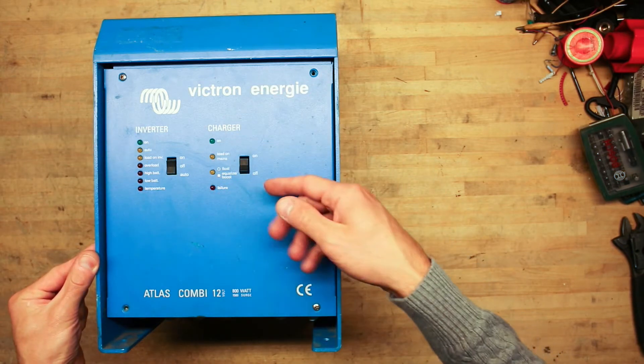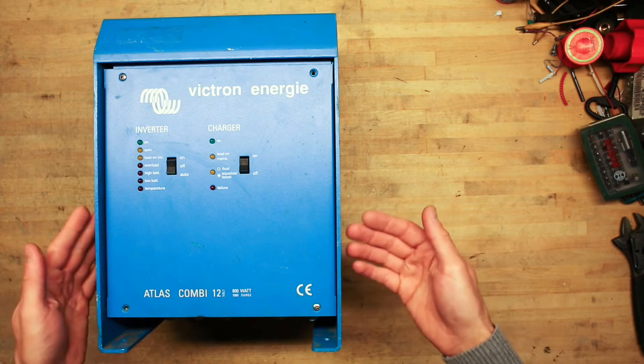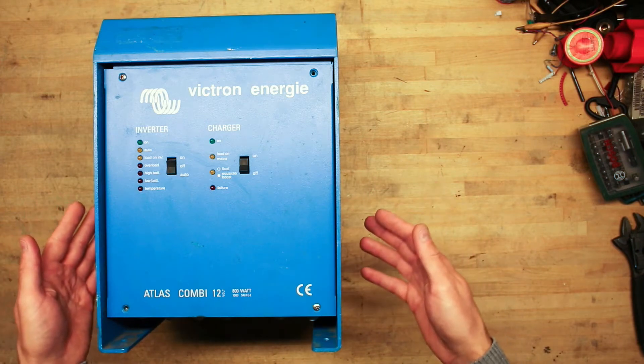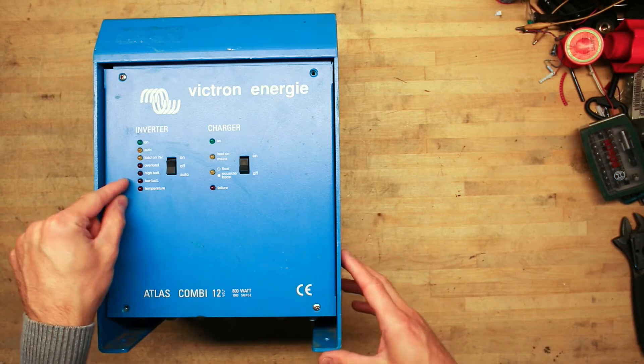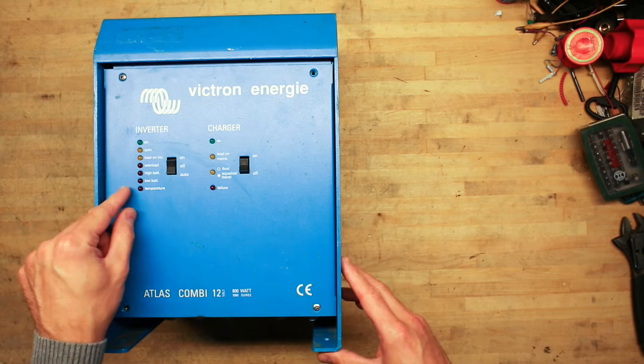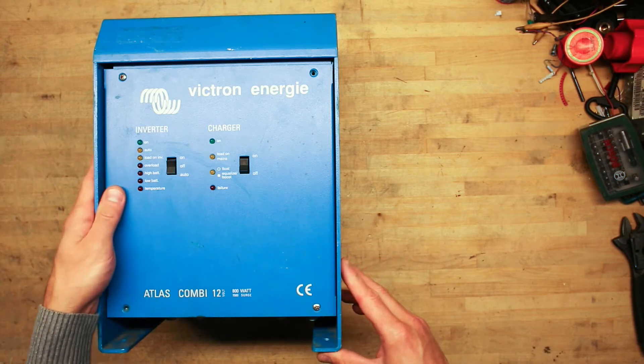So the charger part is of course for 230 volt mains in and can charge the battery bank. And the inverter part is for the 230 volt AC out, which can take energy from the battery bank.